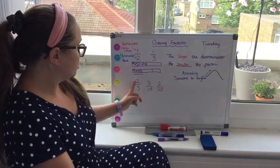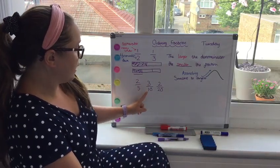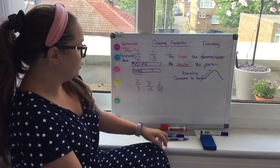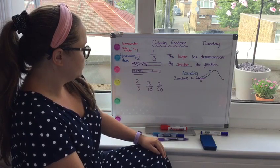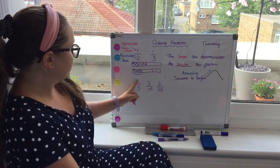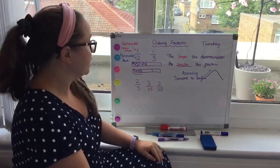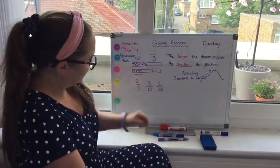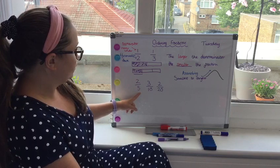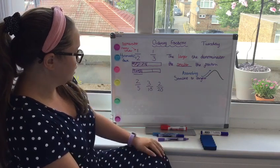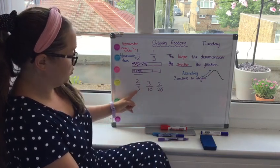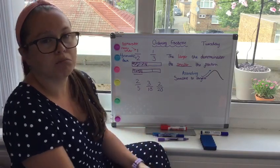So here we've got two fifths, three tenths and two twentieths. Well, all the numerators are different sizes, so I can't just base it on the fact of the denominators. I need to convert them all to a common multiple.